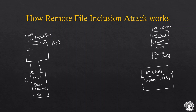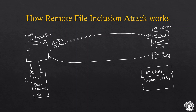By exploiting the remote file inclusion, when the URL is submitted with certain modifications, the request is sent to the malicious server instead of the legitimate DVWA server — the legitimate server is bypassed. The malicious server then returns the script file, which establishes a reverse shell connection with the attacker's machine. Once that shell is established, the attacker has complete control over the web application and can execute any sort of commands and achieve whatever they wish to do.